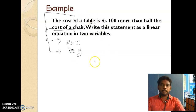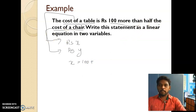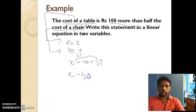The cost of the table is x. So x equals 100 more than half the cost of the chair, which gives x = 100 + (1/2)y.